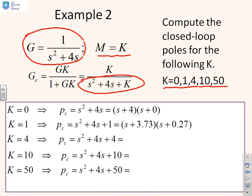I've done the first two for you. If K equals 0 then Pc becomes s squared plus 4s and therefore I get s plus 4 times s plus 0, so poles at minus 4 and 0. If K equals 1 I get s squared plus 4s plus 1 which gives me s plus 3.73 times s plus 0.27. What about the next one? s squared plus 4s plus 4. Well in this particular case you've got s plus 2 squared. I better write it up here. You've got s plus 2 squared, so two poles at minus 2.